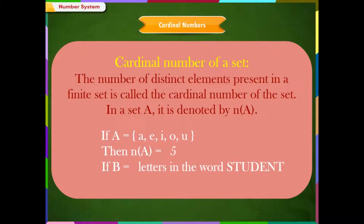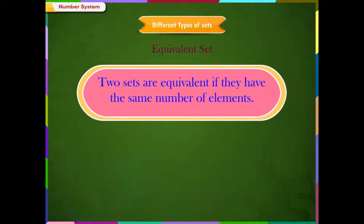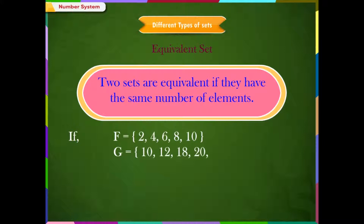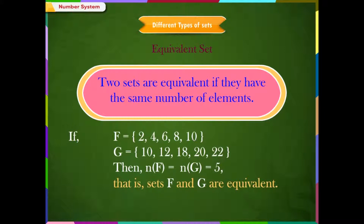If B is equal to the letters in the word 'student,' then N(B) is equal to 7. Different types of sets. Equivalent set: two sets are equivalent if they have the same number of elements. For example, if F is equal to {2, 4, 6, 8, 10} and G is equal to {10, 12, 18, 20, 22}, then N(F) is equal to N(G) is equal to 5. That is, sets F and G are equivalent.